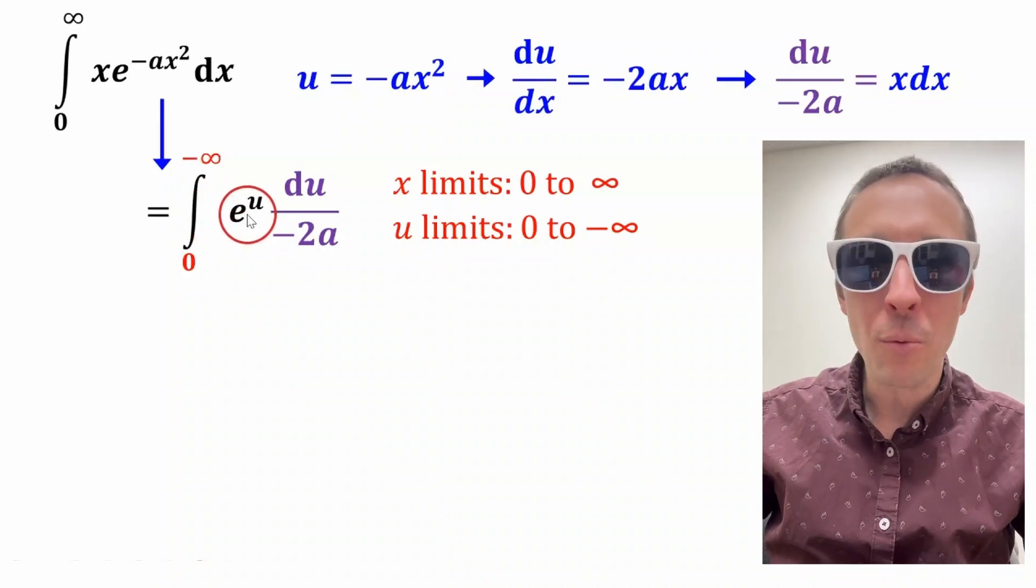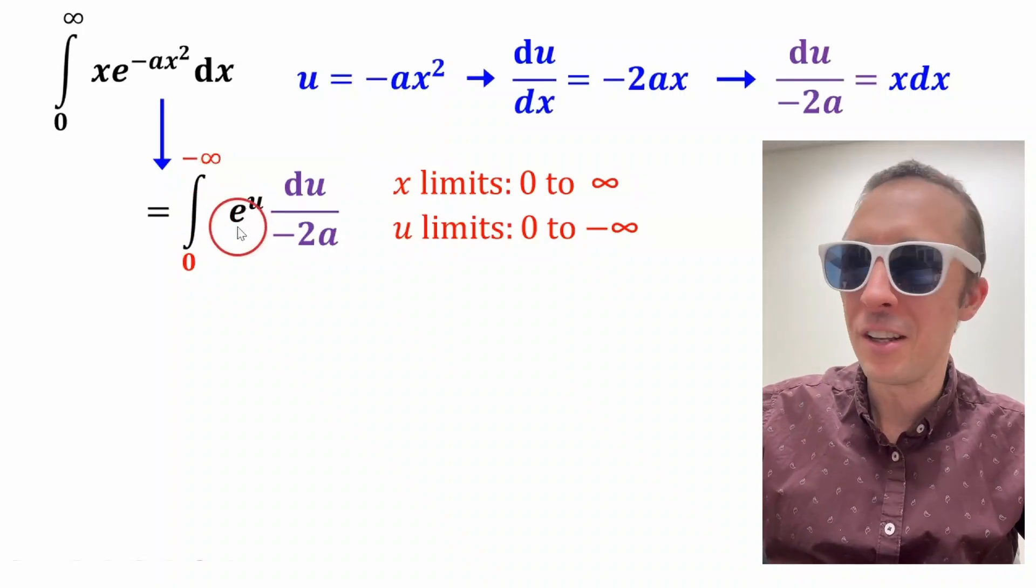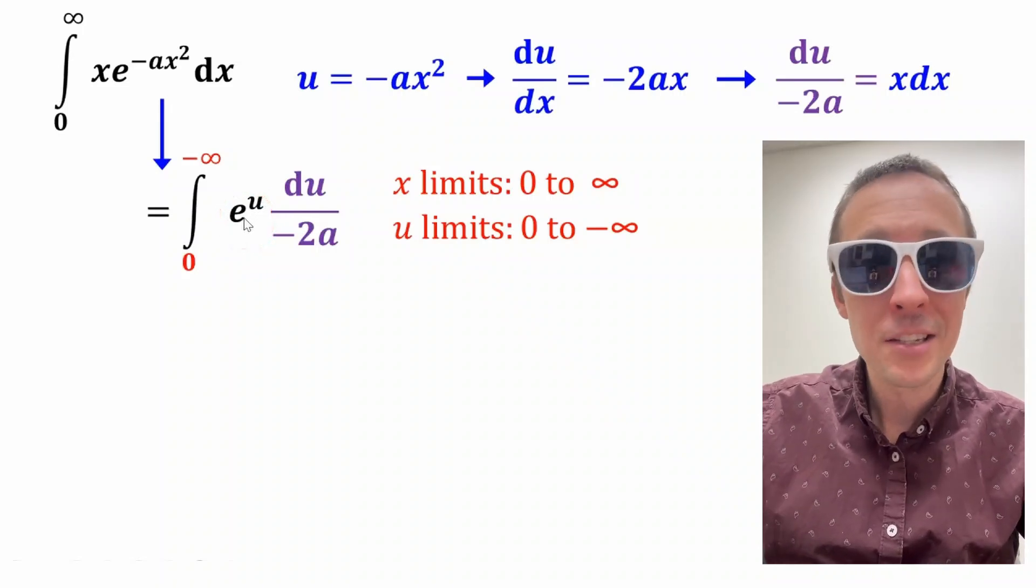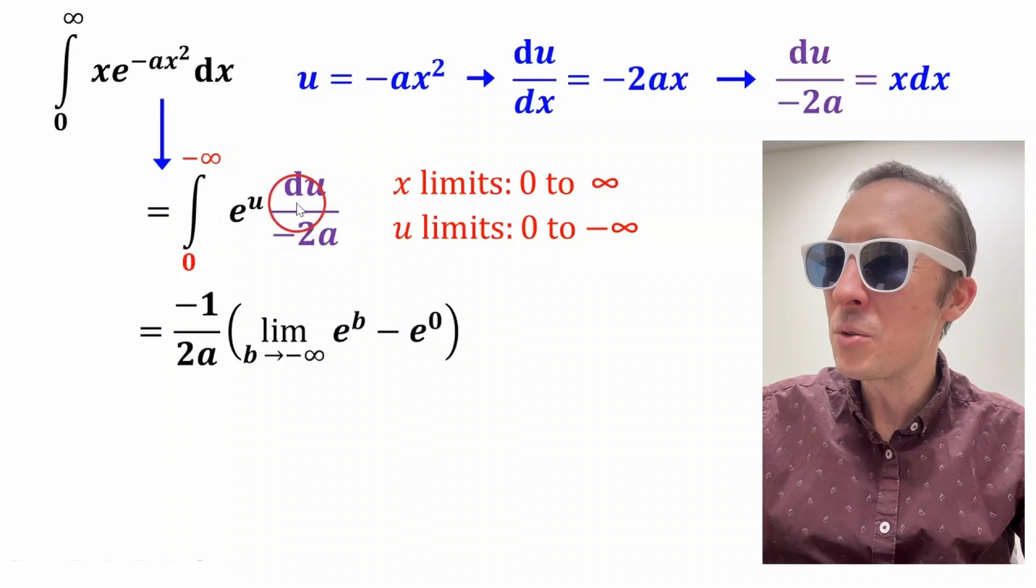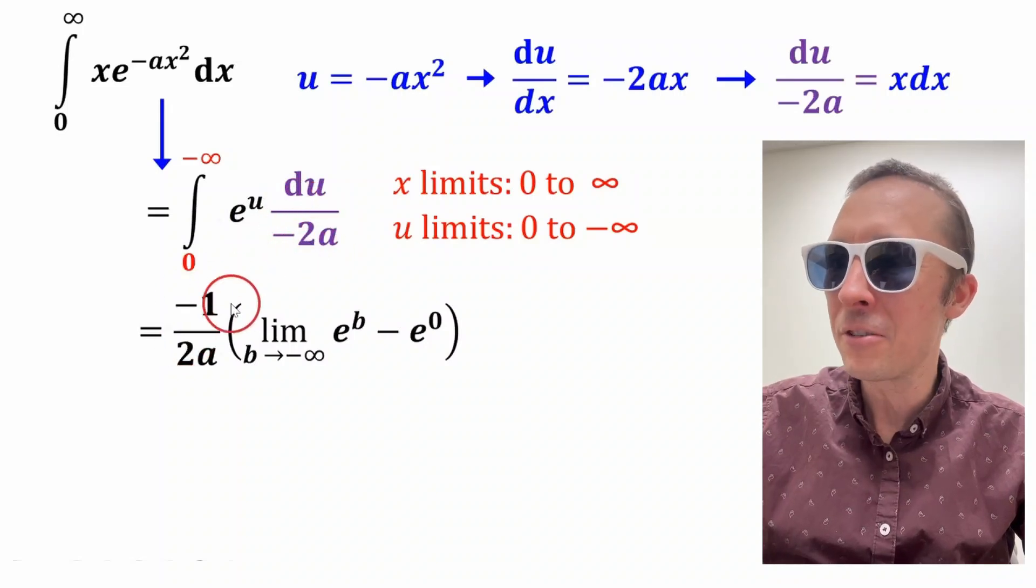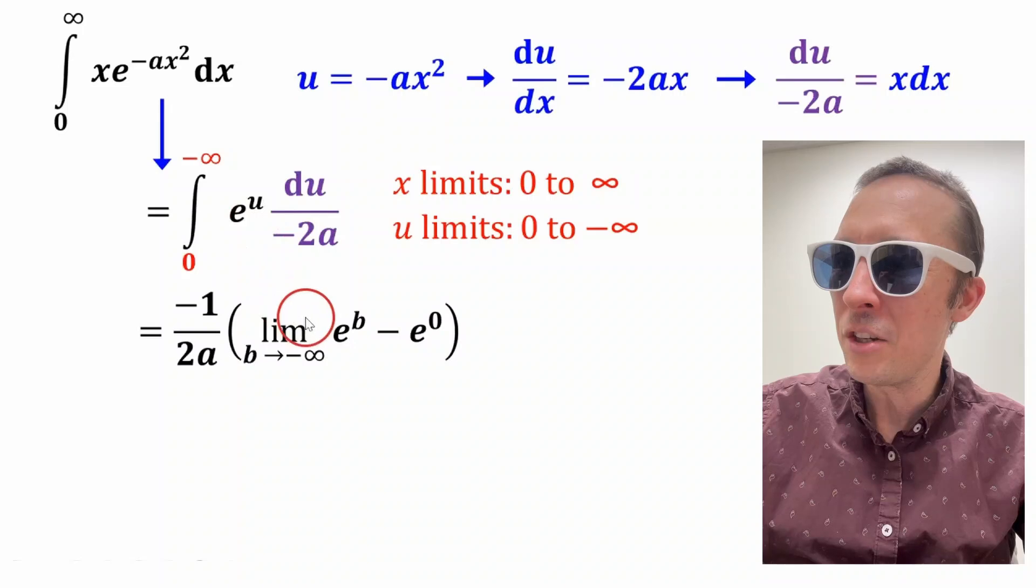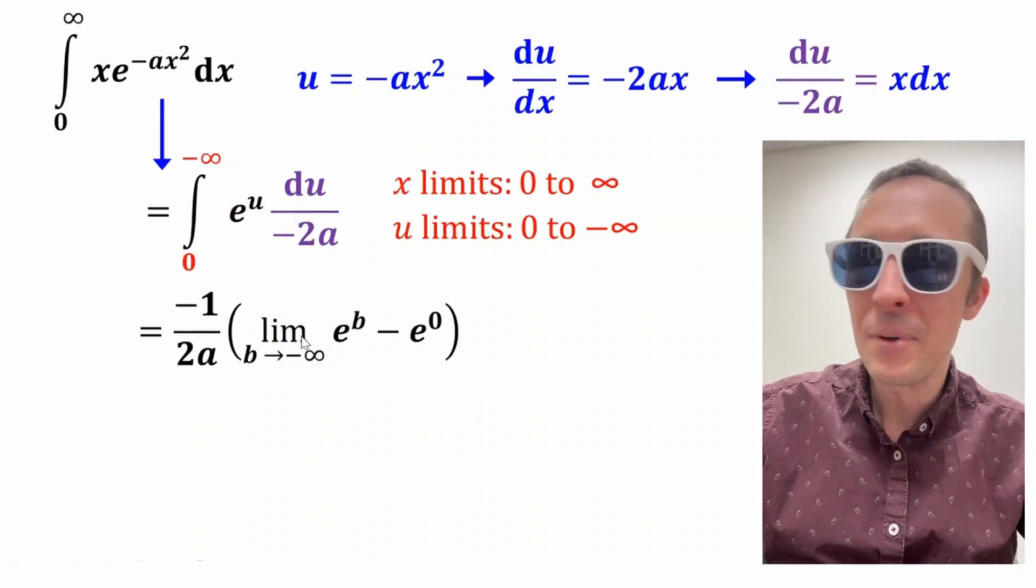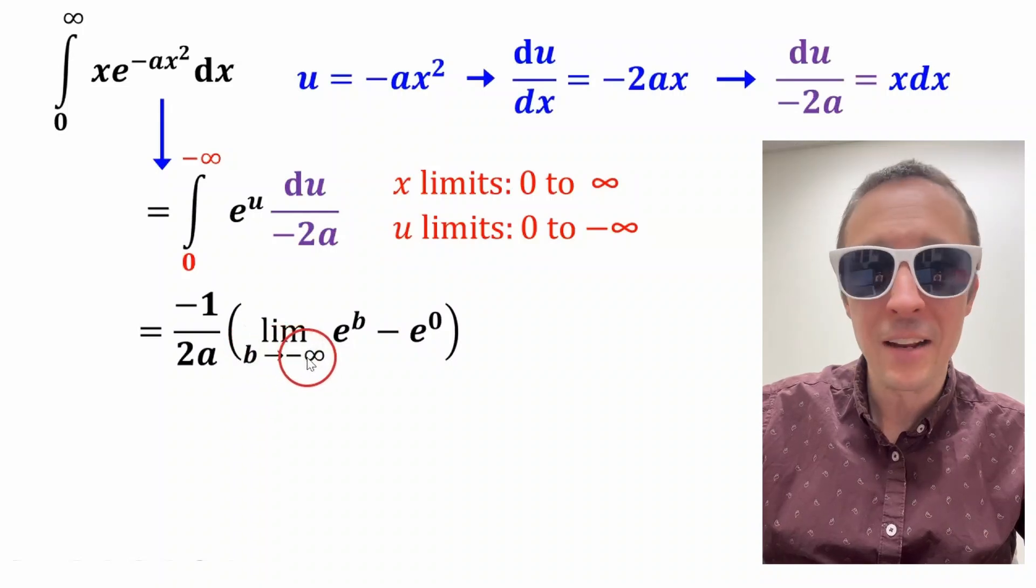Okay, at this point, we can integrate no problem, because the integral of e to the u is e to the u itself. So this negative one half a gets yanked out of the integral, and we're integrating e to the u, which is e to the u, and we'll just evaluate it at these limits to negative infinity.